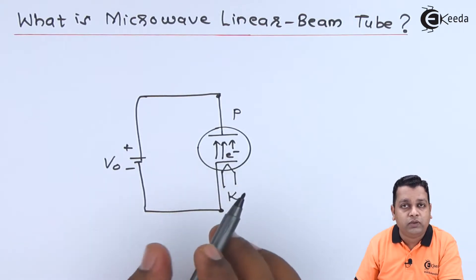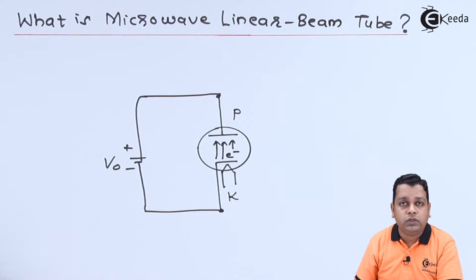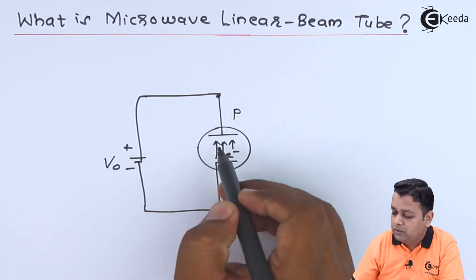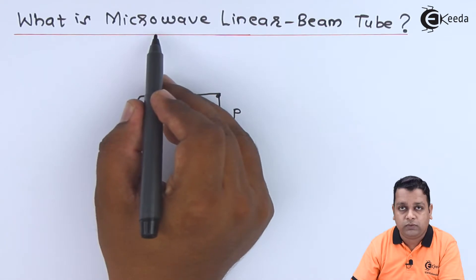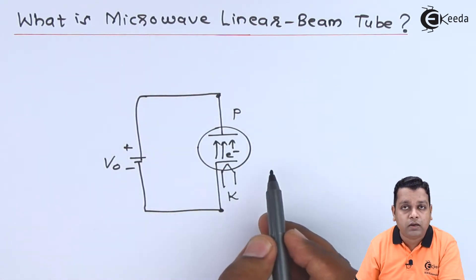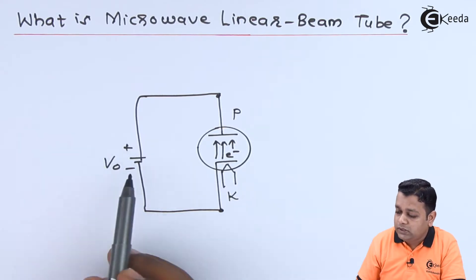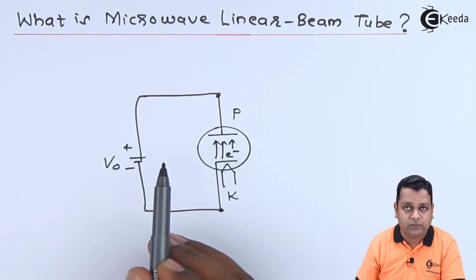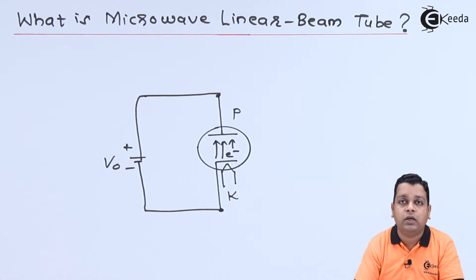Now, how exactly these vacuum tubes are modified to become microwave tubes we shall see in subsequent lectures. In the microwave linear beam tube, the electron beam travels from cathode to the plate — this beam is linear. When the vacuum tube is modified into a microwave tube, the microwave interacts with the electron beam. The electron beam holds energy: the applied DC potential gives it potential energy, which is converted to kinetic energy during the journey from cathode to anode. In between that journey, the microwave interacts with the electron beam.